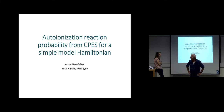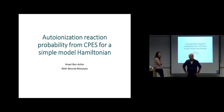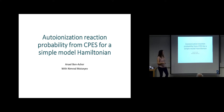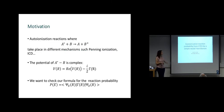This is the second project we thought about, using very simple models. The name of the project is autoionization reaction probability — what we calculate for the experiment from CPS, but for a simple model Hamiltonian. This model can fit to any mechanism.